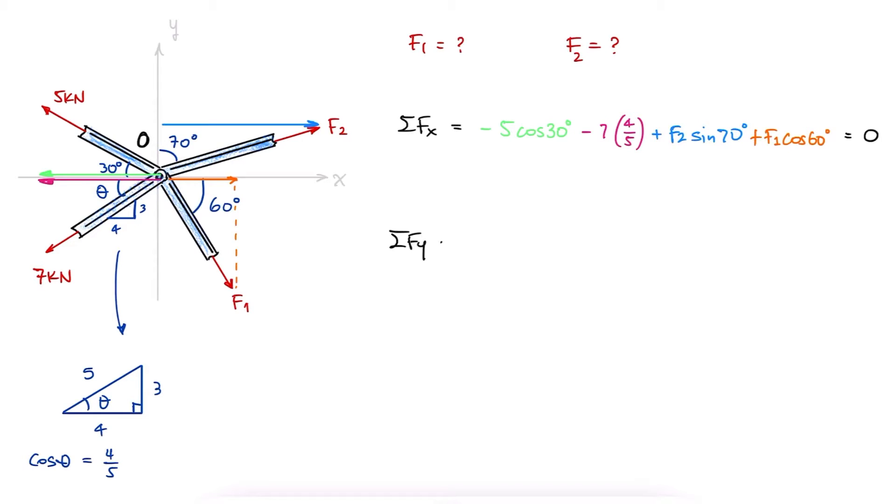For the y-component, we would find positive values for the y-component of 5 kN and F2, and negative values for the y-component of 7 kN and F1.